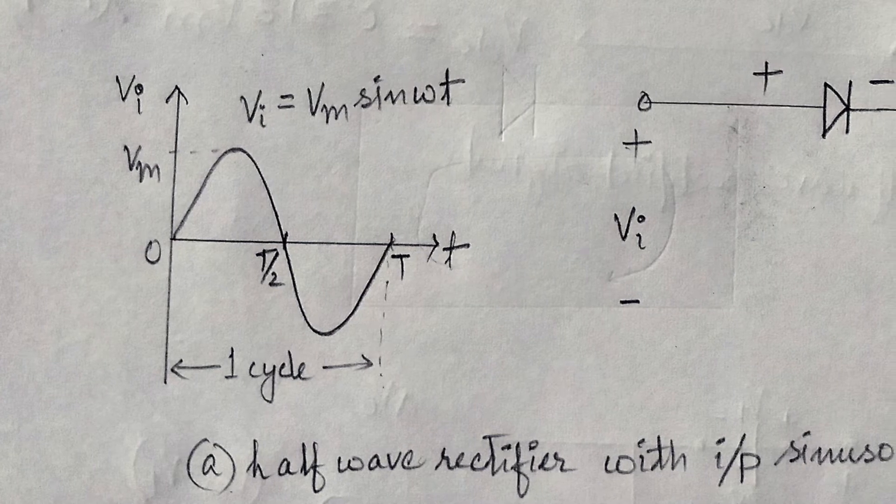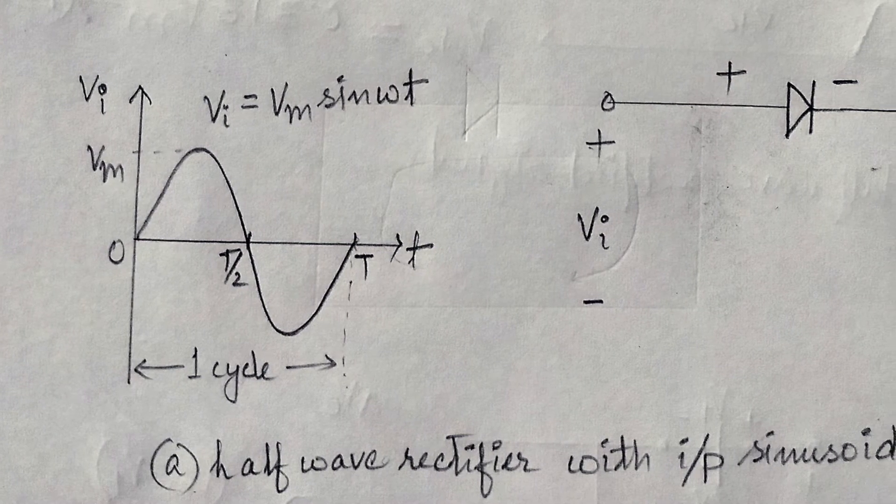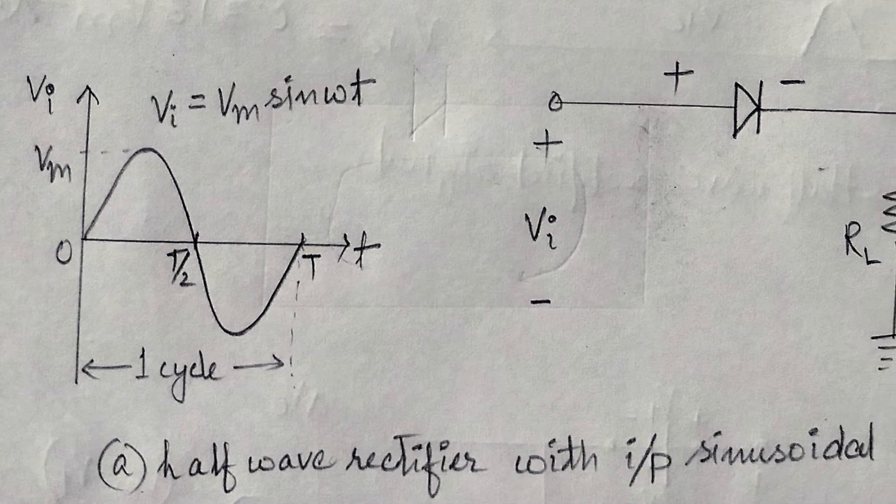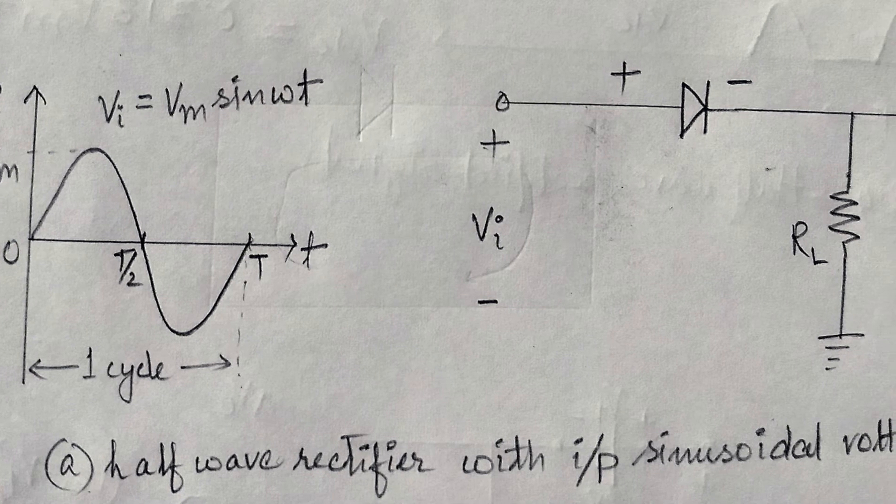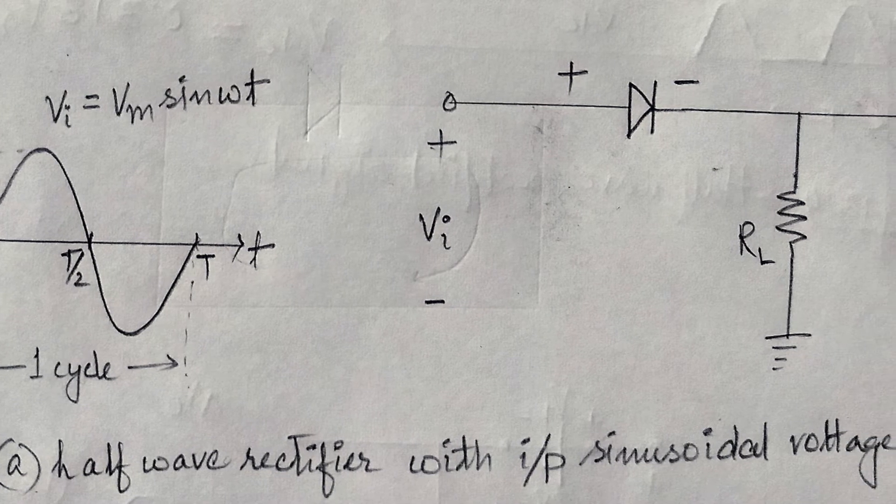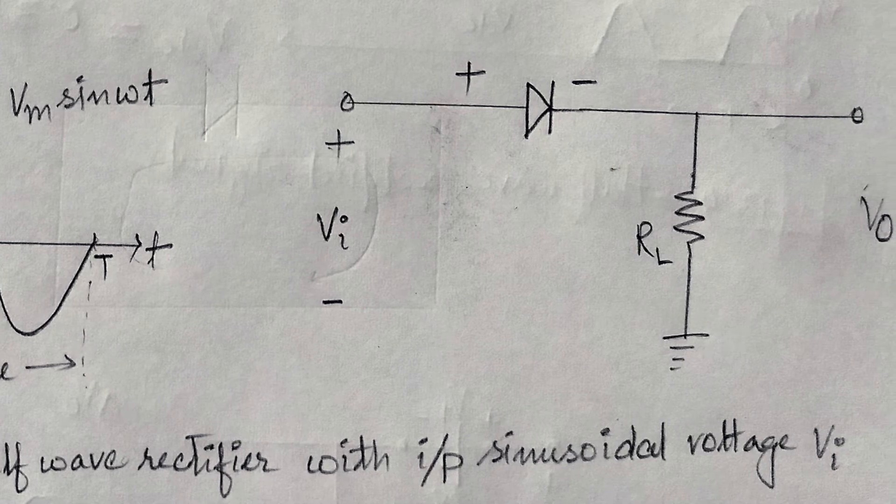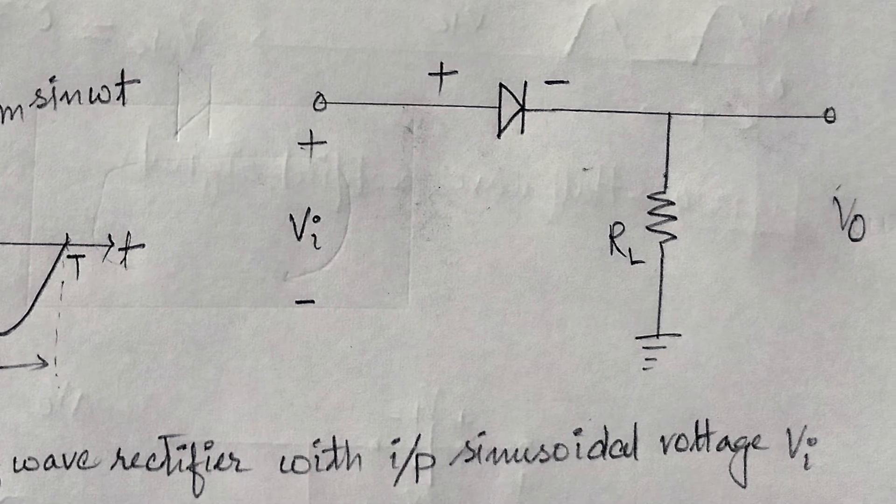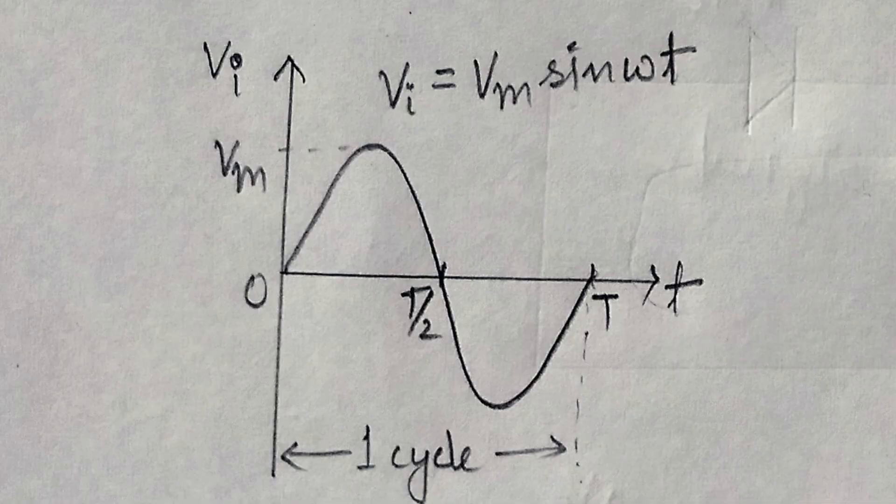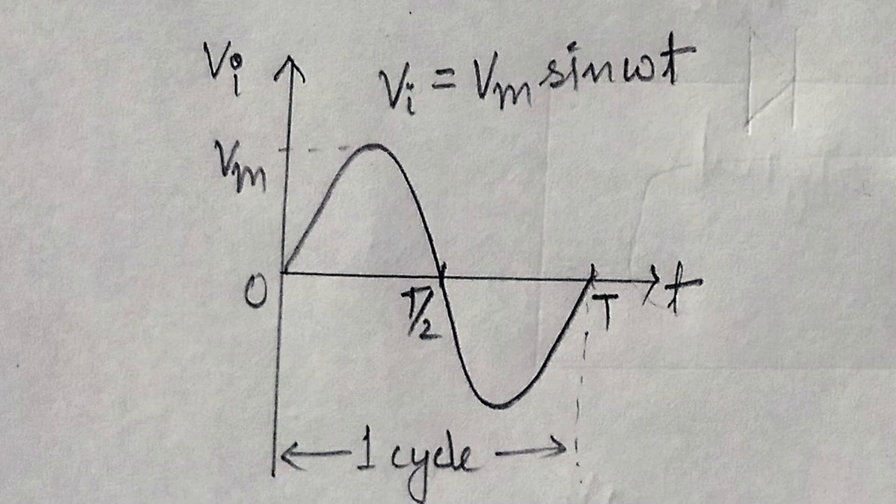Now, let us understand the working of half-wave rectifier. The simplest of network to examine with the time-varying signal appears as shown in the figure A. Assume that the diode is ideal. One full cycle is defined by the period capital T. Vi be the input sinusoidal voltage. We will consider the circuit for positive and negative half-cycles separately.